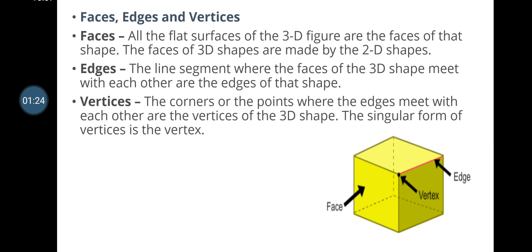In 3D figures, you need to know some key terms. First, faces: all the flat surfaces of a 3D figure are its faces, and the faces of 3D shapes are made by 2D shapes. For example, a cube is formed by six different squares joined together — each square is one face of the cube.